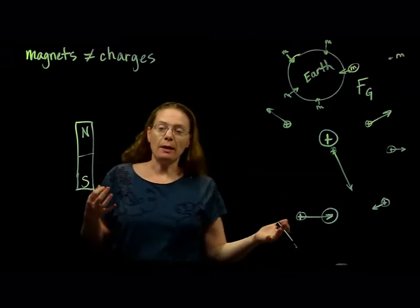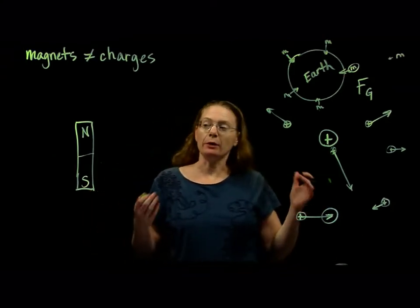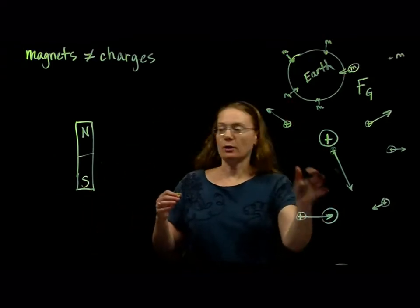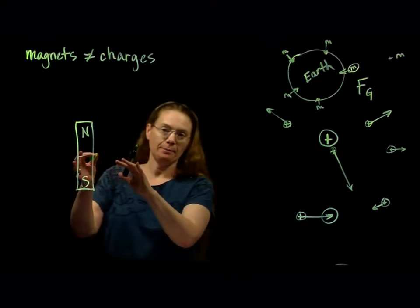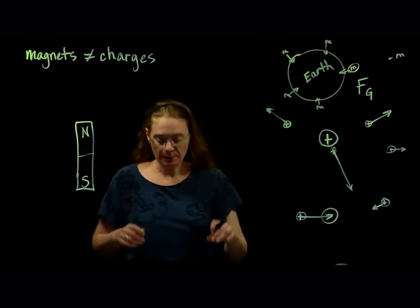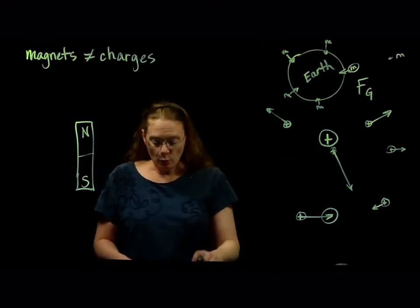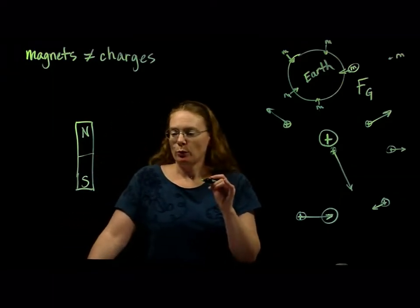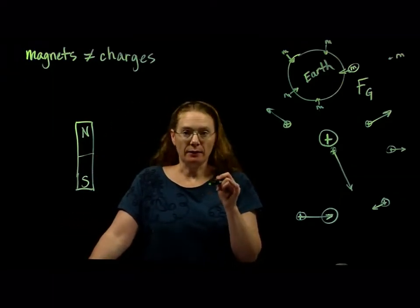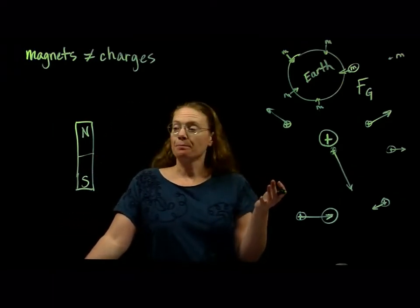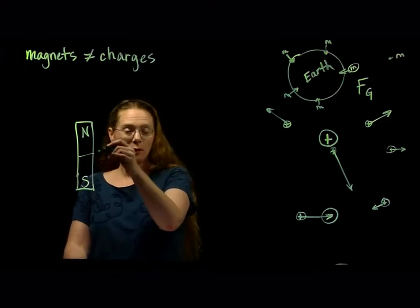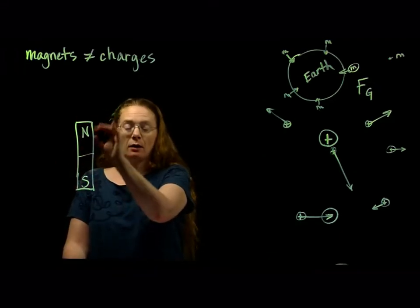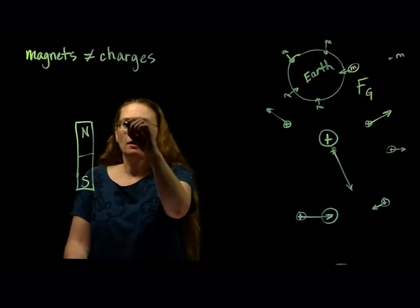A field is just a map of what would happen around an object — a mass, a charge, or a magnet. So what would happen to a little magnet, let's say a compass, if we brought it close to this bar magnet right here?